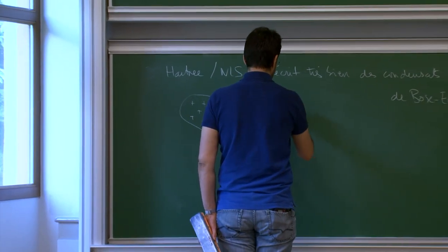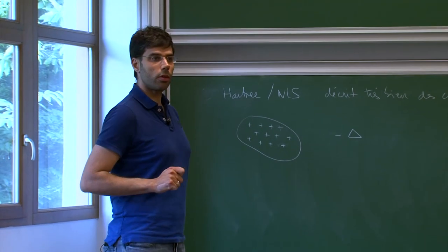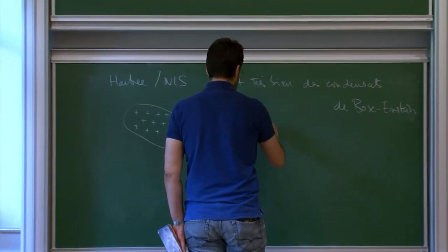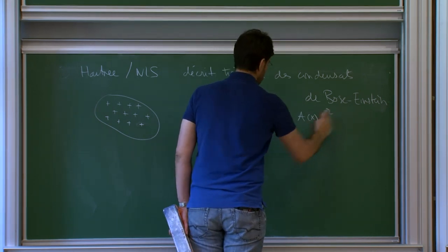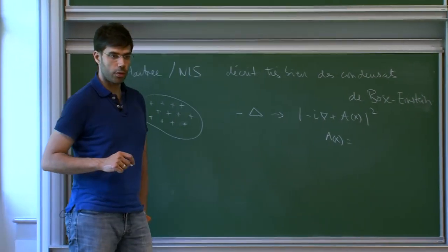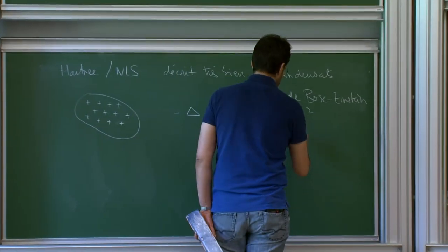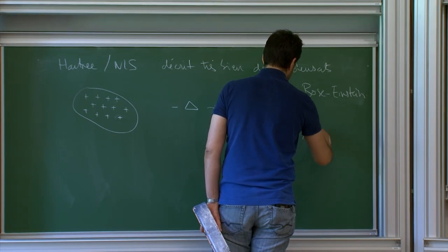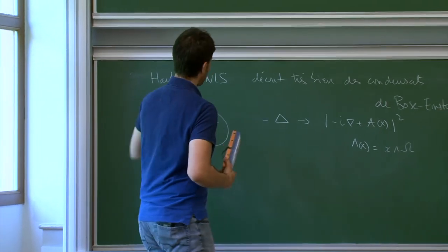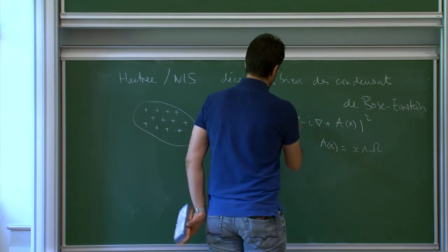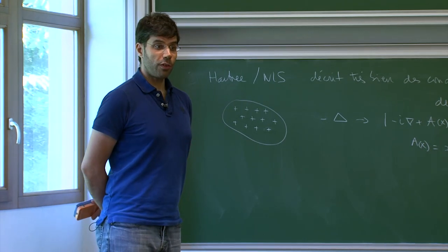What does making it rotate mean? You replace the Laplacian by (−i∇ + A)², where A(x) is something like a magnetic potential — but the particles are not charged, so it is really a rotation velocity, something like x × Ω where Ω is the rotation axis. So for describing such objects, it is also important to be able to replace the Laplacian by this operator. And here there is a real difficulty that I will explain after the break.